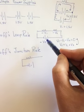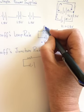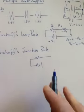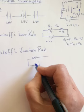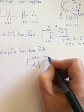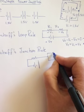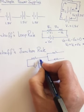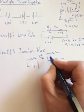If the battery puts in 20 volts, then between R1 and R2, they have to take out 20 volts. That's the loop rule. The junction rule says that the current flowing into a junction has to be equal to the current flowing out of it.